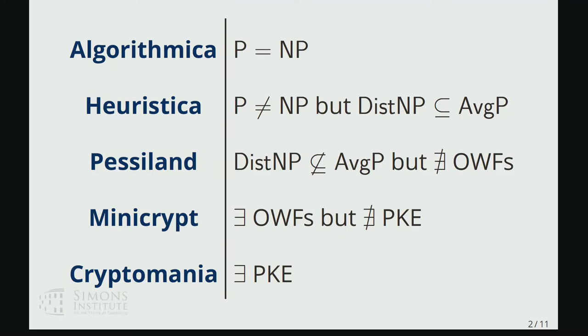all the way down to Cryptomania, where P is different from NP in such a strong sense that you get really powerful cryptography like public key encryption.